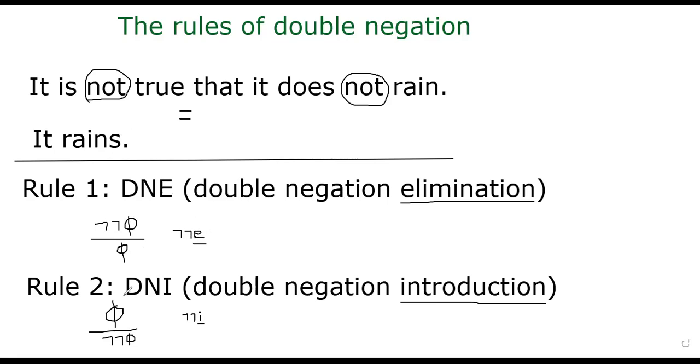Similarly, if we have some premise, you can introduce double not to that premise because it's same as the original premise. So this is called double negation introduction. Suppose you have a statement it rains, it's same as it is not true that it doesn't rain. So in this case, we are applying rule two. Suppose you are going from this direction to this direction, we are applying rule two. If you go this direction, we are applying rule one. This is rule one because we are eliminating nots in this direction. If you go this direction, we are introducing nots. These are the two foundational rules for double negation.